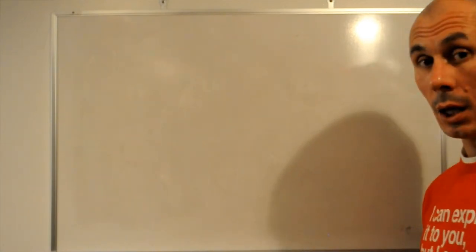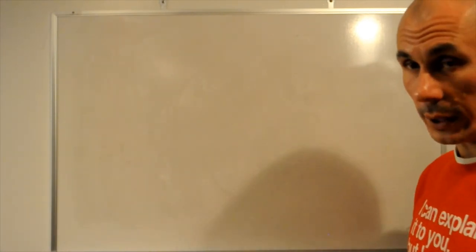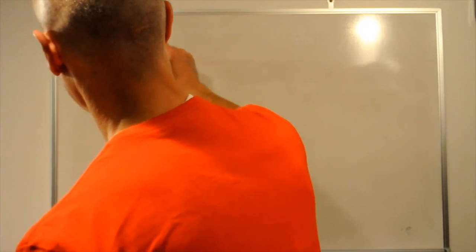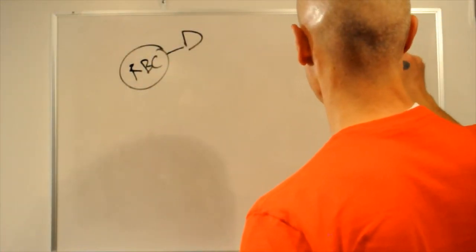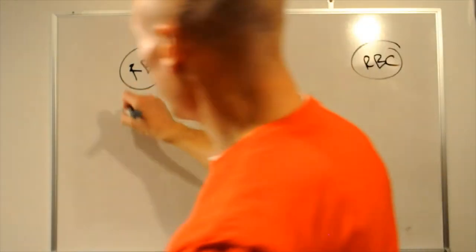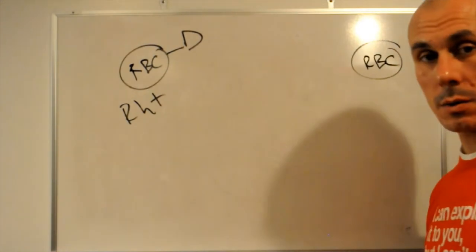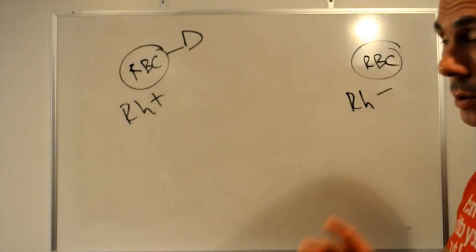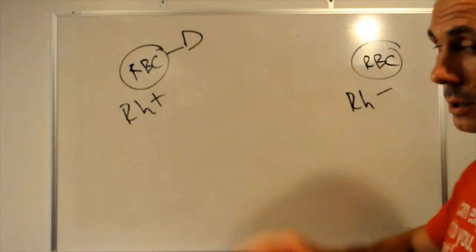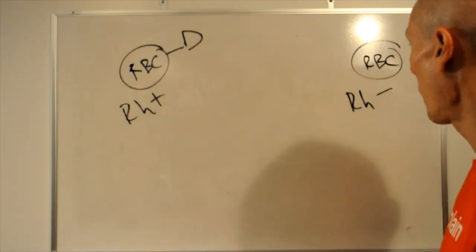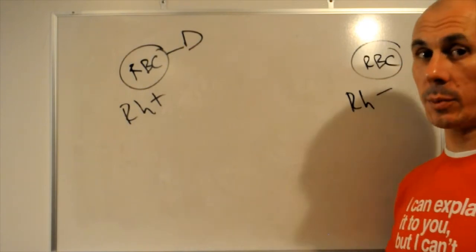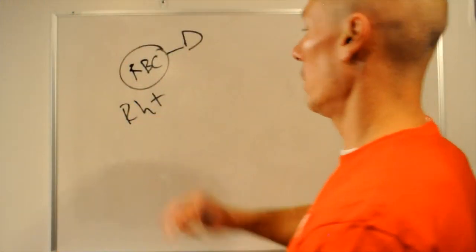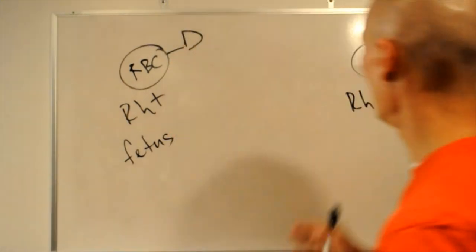Now, in the same line of thinking is rhesus conflict. Turns out that some people have red blood cells with a so-called D antigen, and some people have red blood cells without. So, these people are called rhesus positive. Rhesus because this antigen was discovered in rhesus macaques. And these people are rhesus negative. I want to remind you, rhesus antigen is different from ABO blood groups. So, what happens in the rhesus conflict between the mother and the child? Rhesus positive fetus, rhesus negative mom.